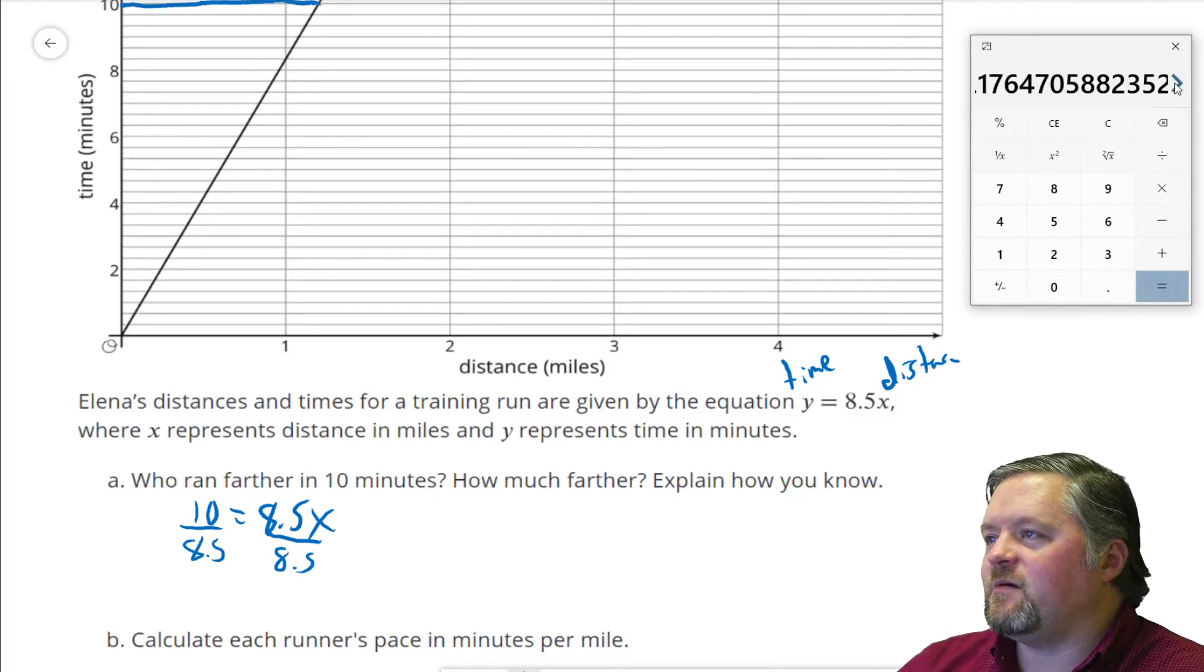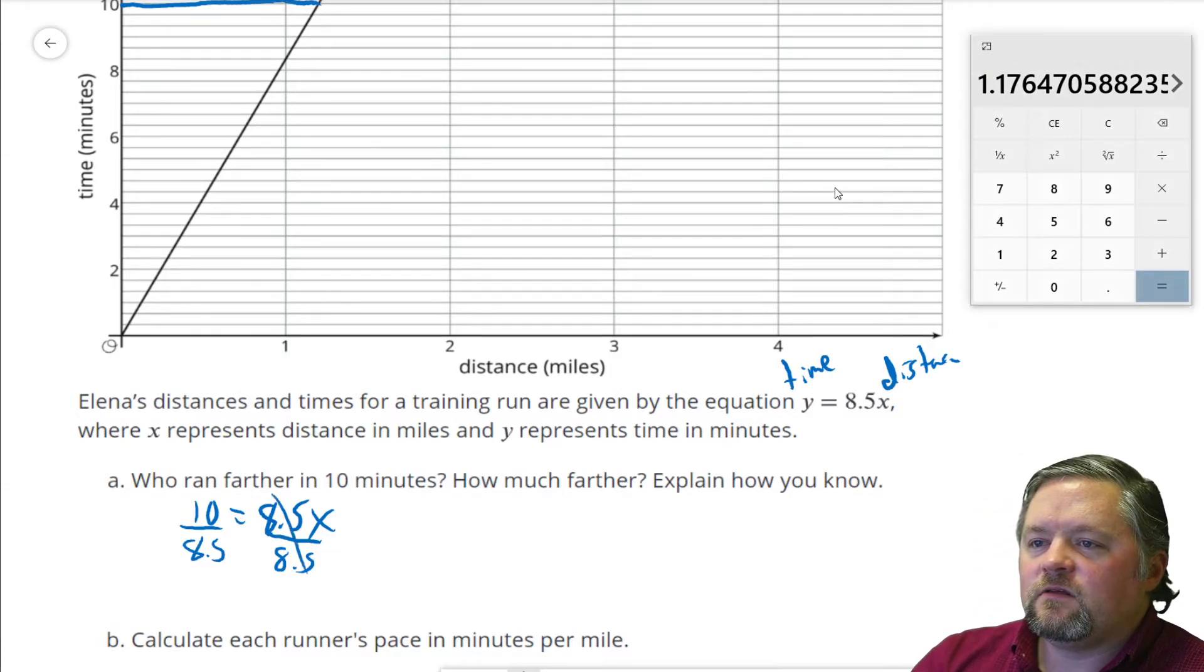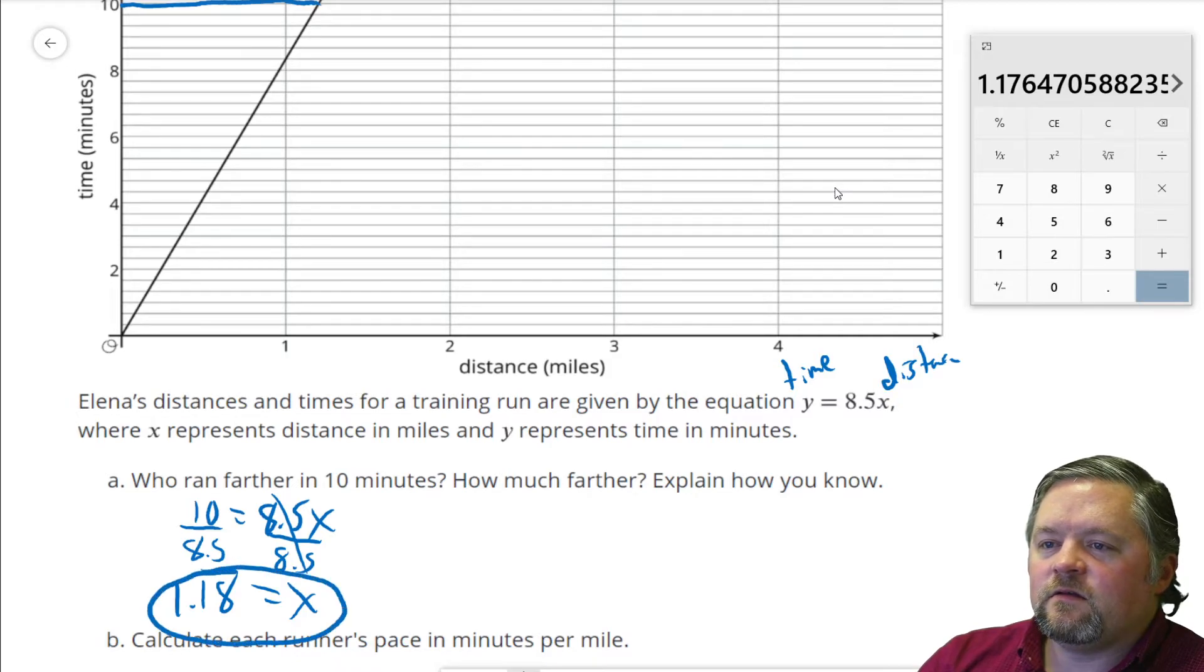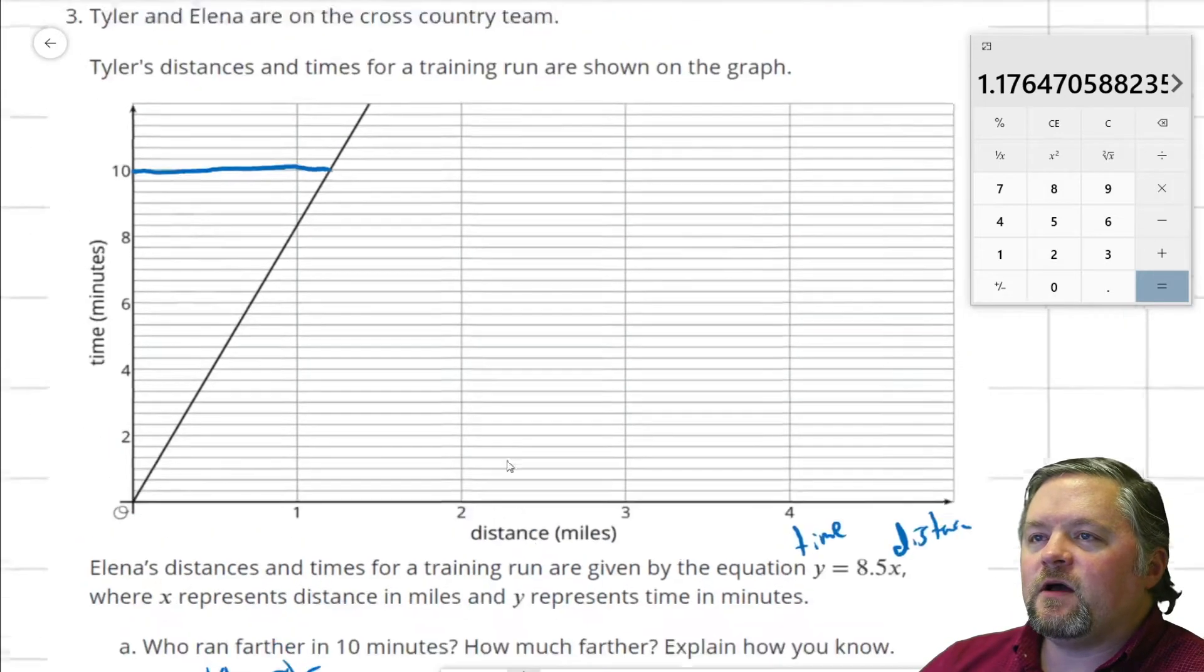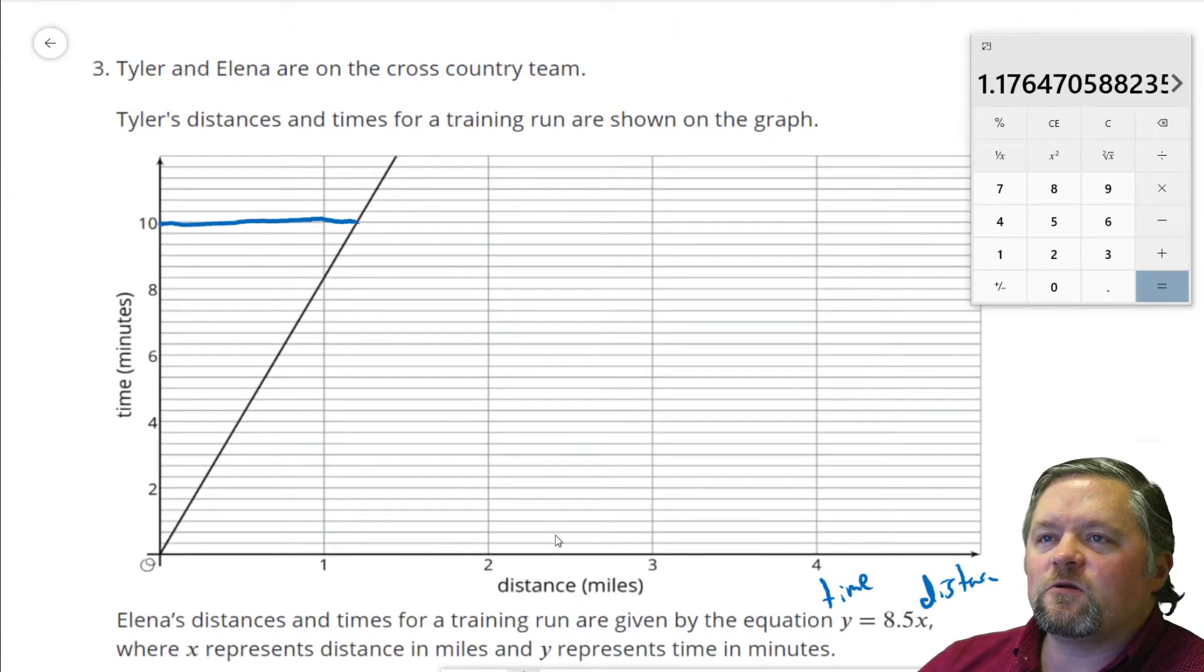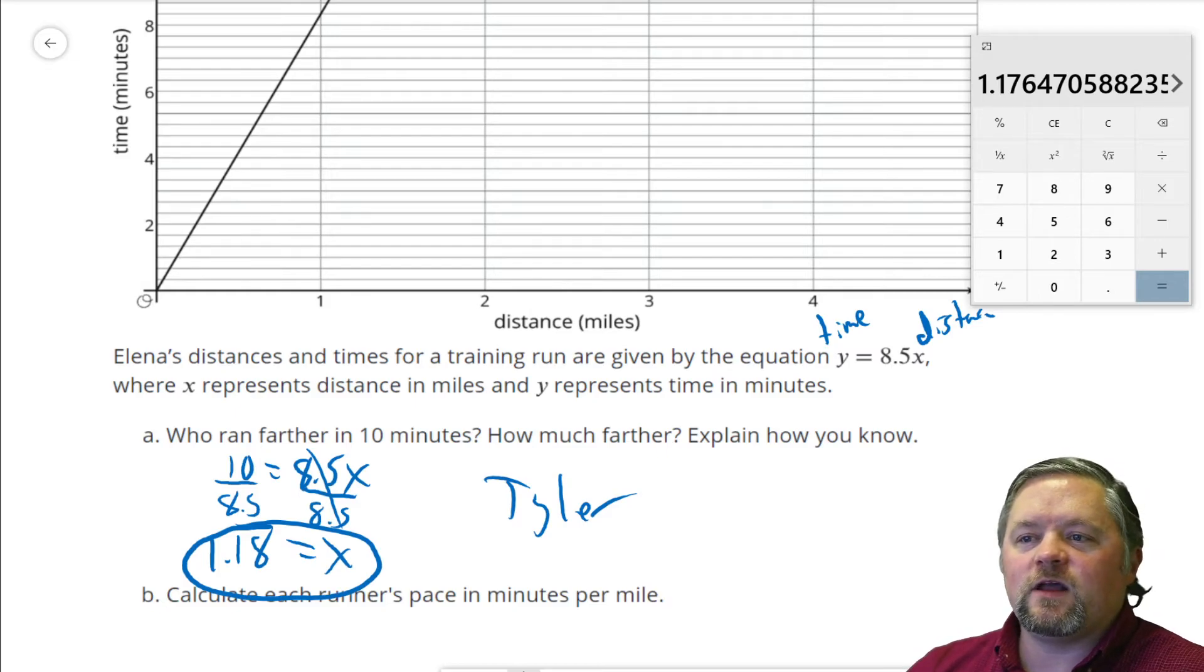Hey, show me the rest of the number. 1.17. Those cancel. X equals 1.176. 176, I'll call it 1.18. Who ran farther? 1.18 miles, or I looked at that and I was thinking it was 1 and a quarter miles. Who ran farther? Tyler, because 1 and a quarter miles is further than 1.18 miles.